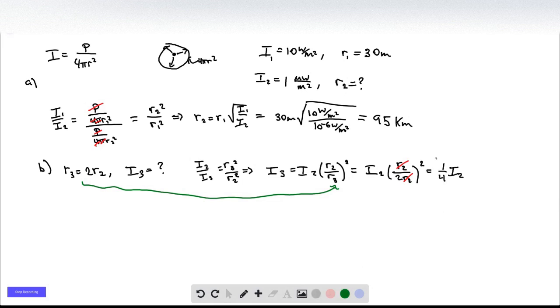And this is just equal to one-fourth times I2. So the final answer is that the intensity decreases by a factor of four. So overall, actually the final answer, if we want to plug in numbers, is 0.25 microwatts per meter squared.